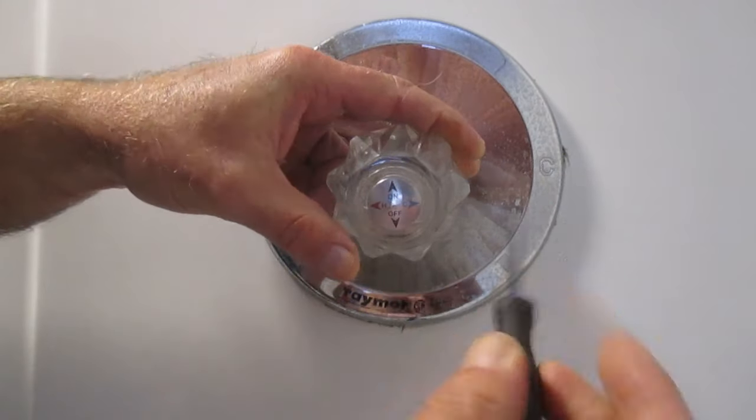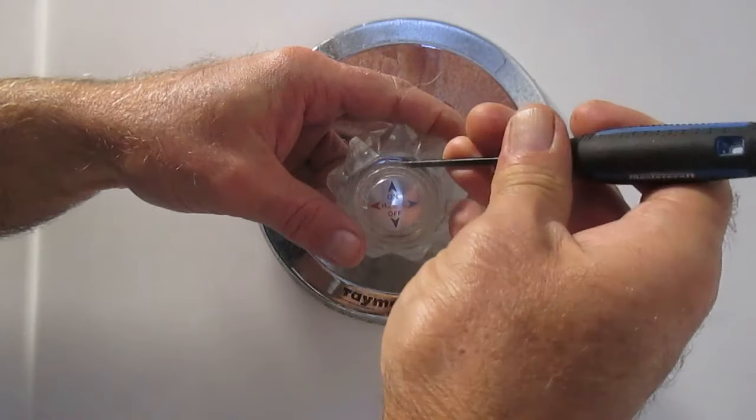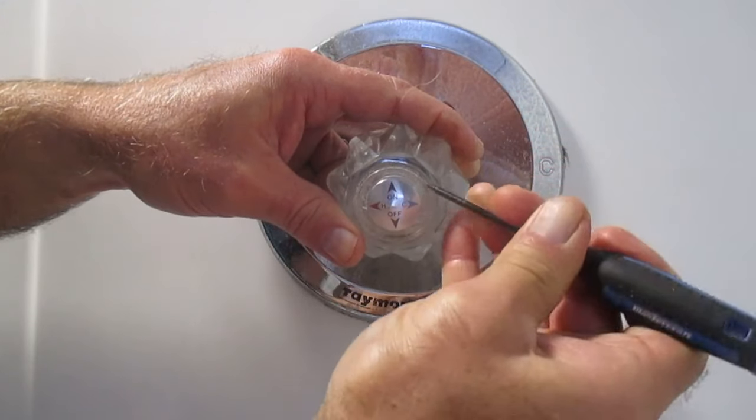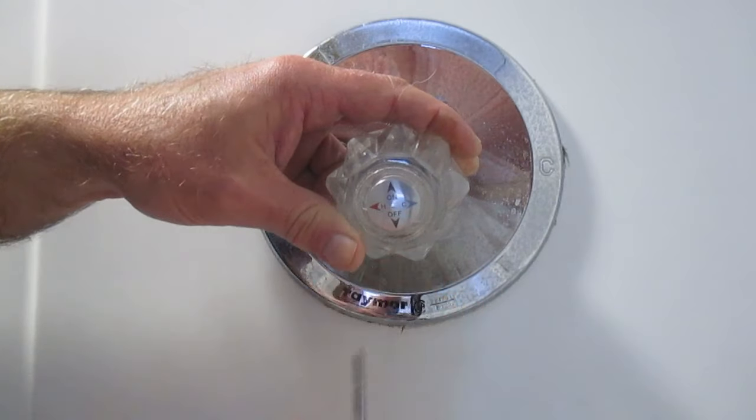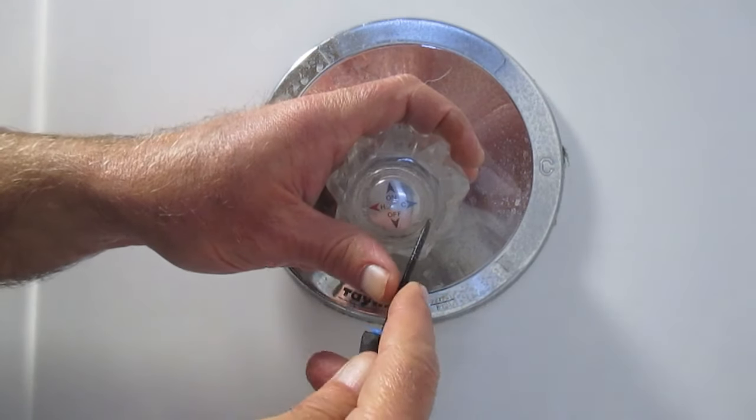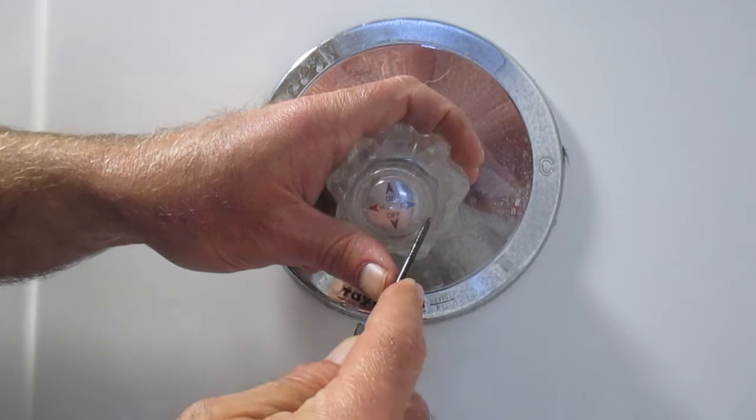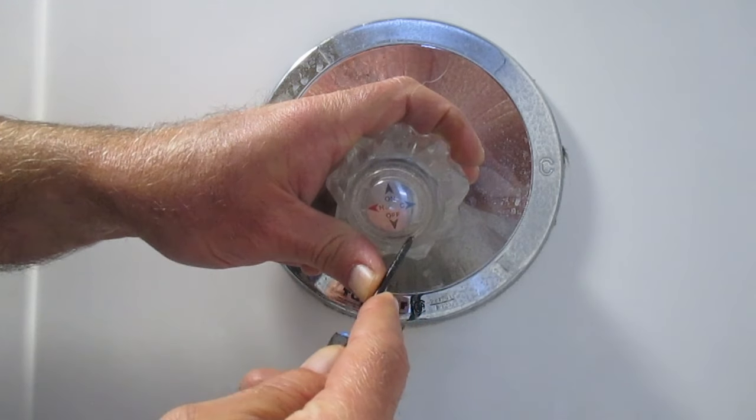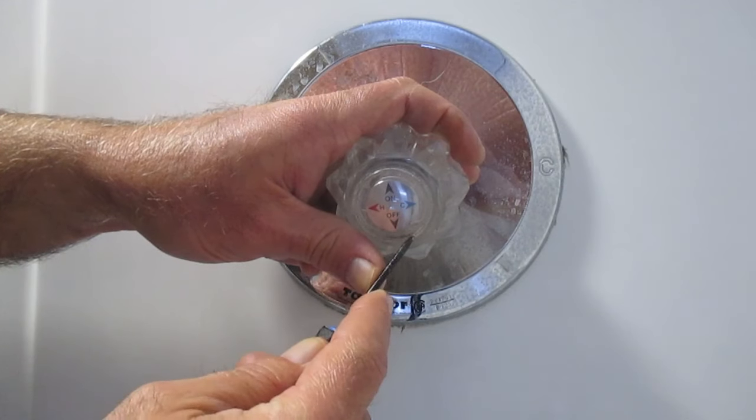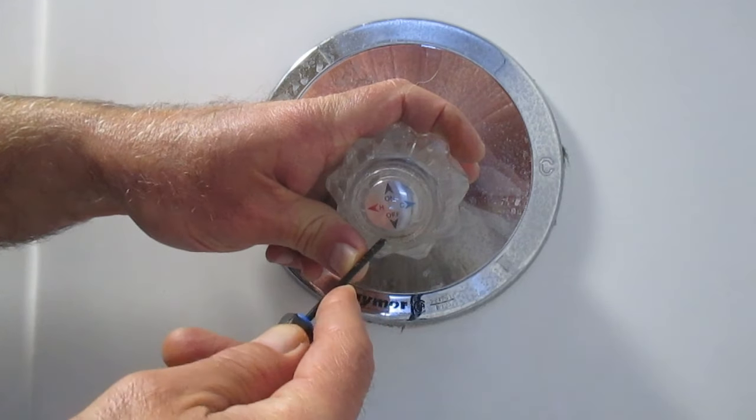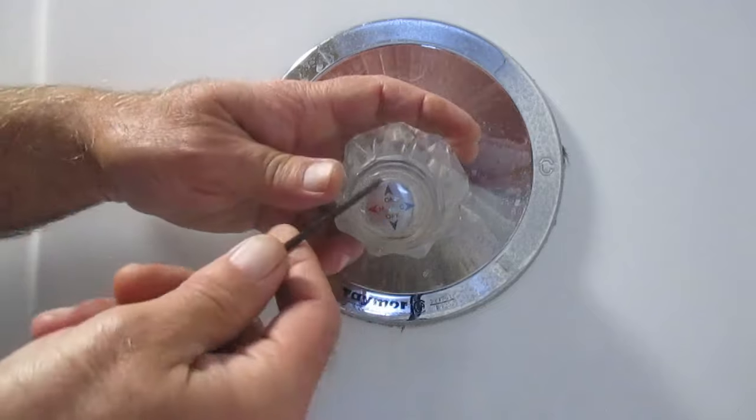You want to get any grunge that's built up in there, but you're less likely to cut your finger with a small flathead screwdriver. As you do this you should find a little space there where you can pop this out.